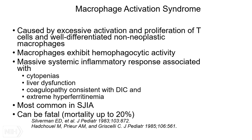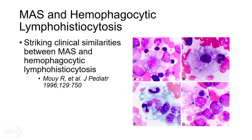In rheumatology, we most commonly see MAS in association with systemic juvenile idiopathic arthritis. It's a life-threatening condition, and reported mortality rates still reach 20%. MAS is strikingly similar to hemophagocytic lymphohistiocytosis, and these clinical similarities certainly include hemophagocytosis. In this particular example, we are looking at a bone marrow of a patient with MAS, and you see these highly activated macrophages phagocytosing normal bone marrow elements, eventually leading to complete destruction of those cells.